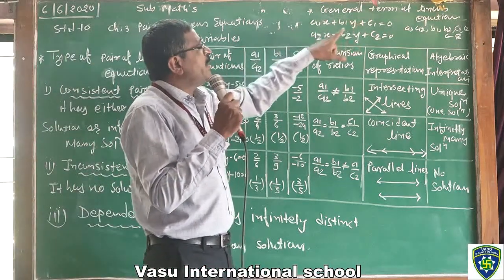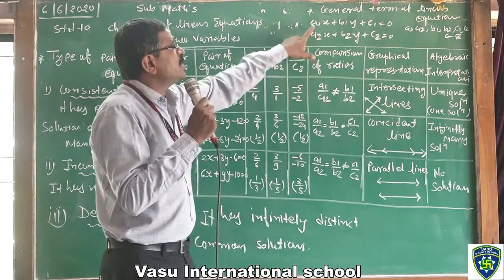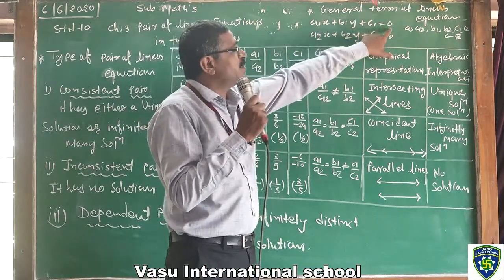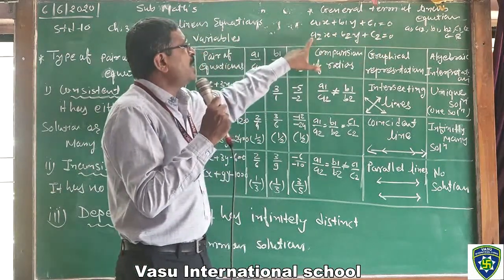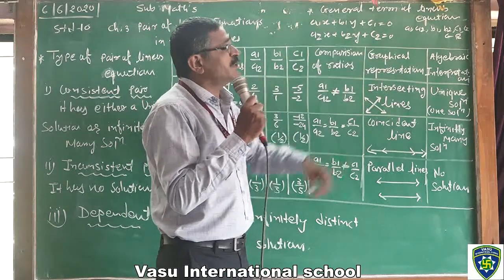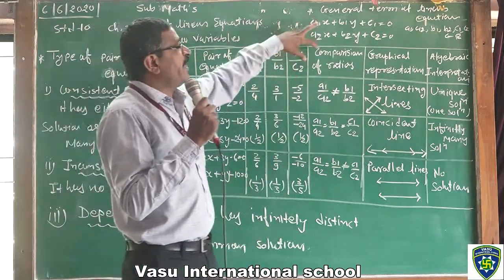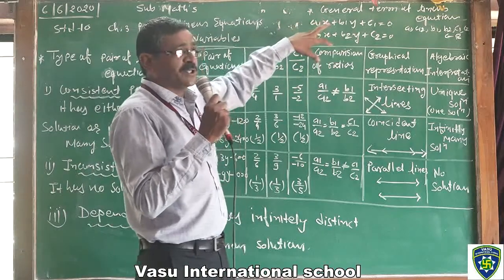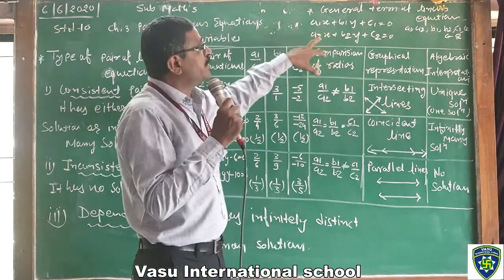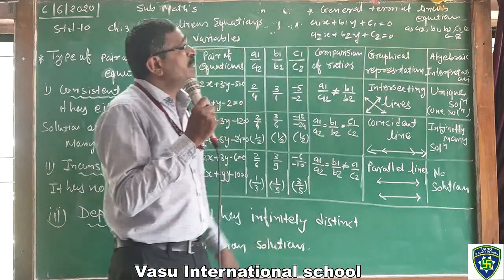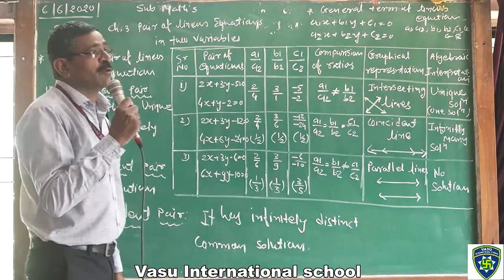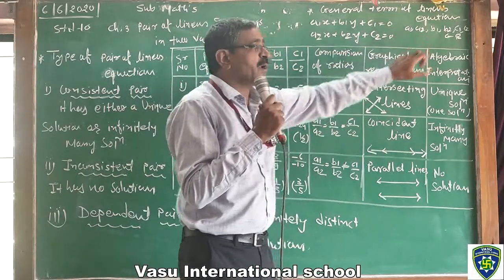Now, the general term of a linear equation is: a1x + b1y + c1 = 0, and a2x + b2y + c2 = 0. This is called the pair of linear equations. In the general form, a1, a2, b1, b2, c1, and c2 belong to R — any real number.